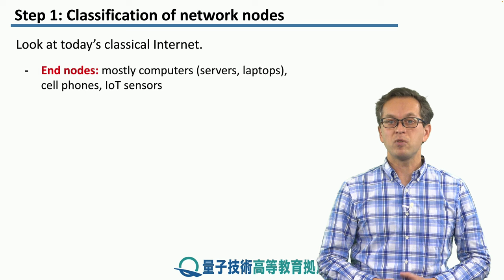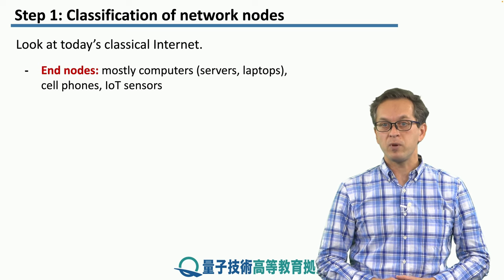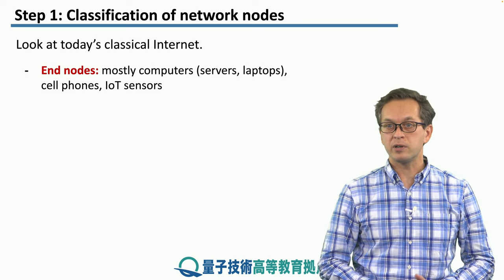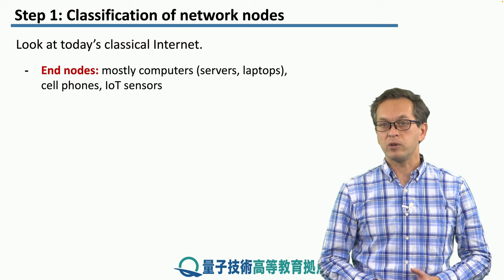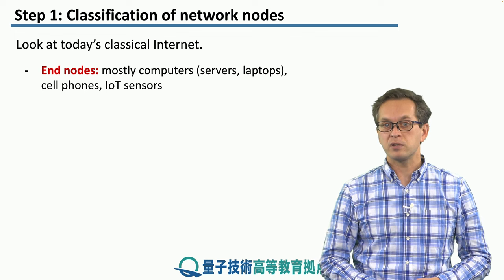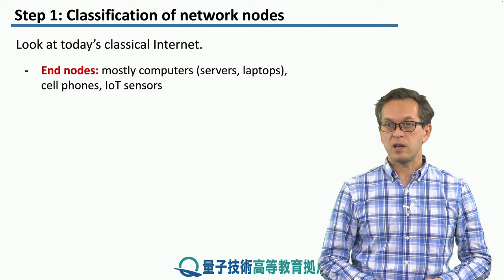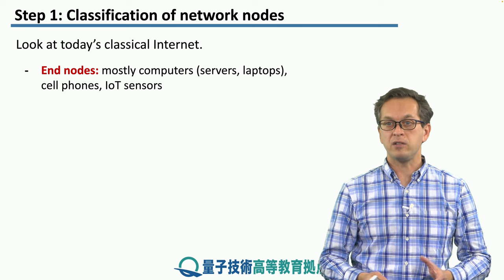So what types of end nodes do we have? Mostly we connect with our computers, our laptops, we connect to servers, our cell phones, and Internet of Things sensors. These are the end nodes.